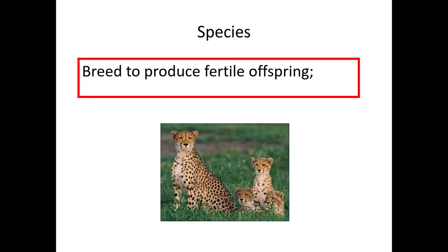The definition of a species — this is taken from a red box, so it's from the mark scheme — is being able to breed to produce fertile offspring. For example, a lion and a lioness are the same species; they can breed to produce fertile offspring. But a lion and a tiger can reproduce to produce something called a liger, but a liger is not fertile. Therefore, a lion and a tiger are not from the same species.